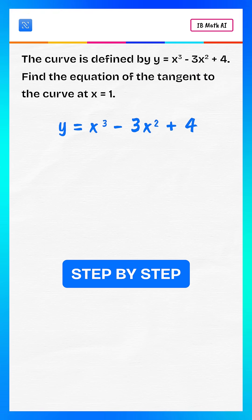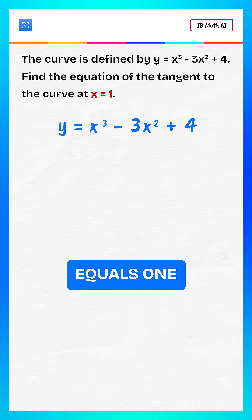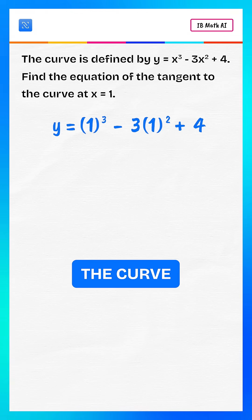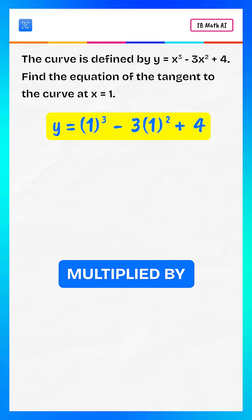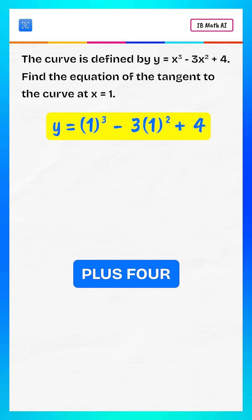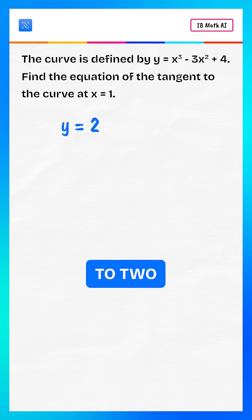Let's solve step by step. First, substitute x equals 1 into the equation of the curve. That gives 1 cubed minus 3 multiplied by 1 squared plus 4, which simplifies to 2. So the point of contact on the curve is 1, 2.